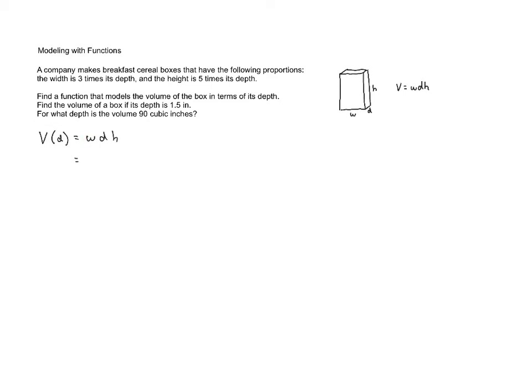So the width is three times the depth. We can express that as three times d. Then times the depth, then times the height. But the height is five times the depth, which is 5d. And if we multiply all of these together, we end up with 15d cubed. So the volume, as a function of the depth, is 15d cubed. That's the answer to the first question we were asked.